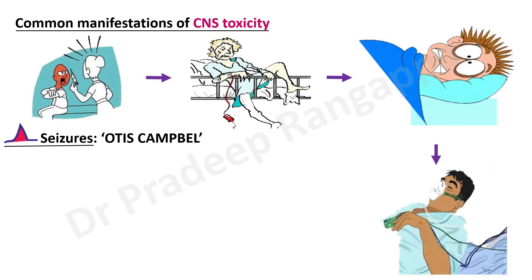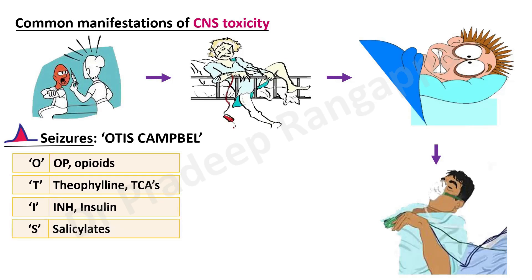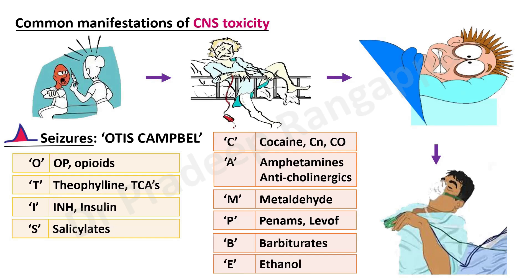There is a distinctive group of drugs that cause seizures, which you can remember using the mnemonic OTIS CAMPBELL: O — opioids; T — theophylline and tricyclic antidepressants; I — insulin (hypoglycemia) or INH; S — salicylates; C — cocaine, cyanide, carbon monoxide; A — amphetamines or anticholinergics; M — metaldehyde; P — carbapenems (imipenem is known to cause seizures, and levofloxacin is also implicated); B — barbiturates; E — ethanol; L — lead and lithium.